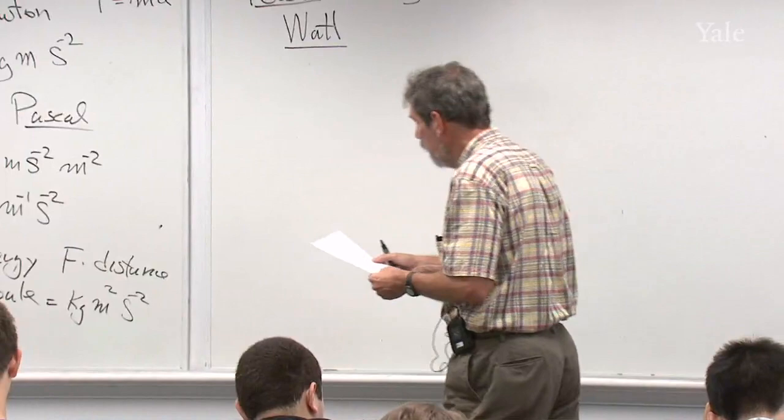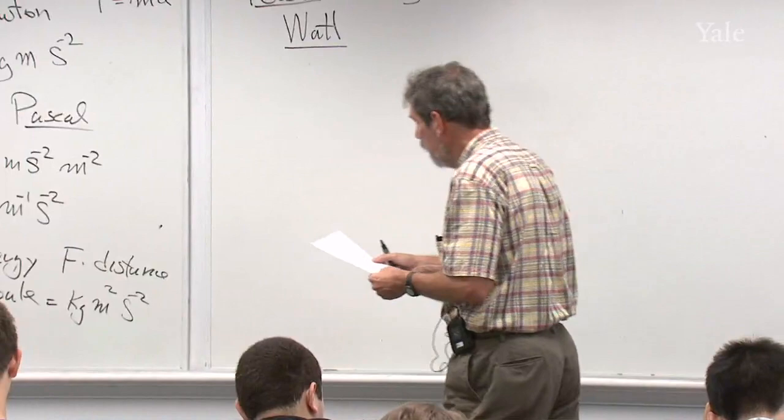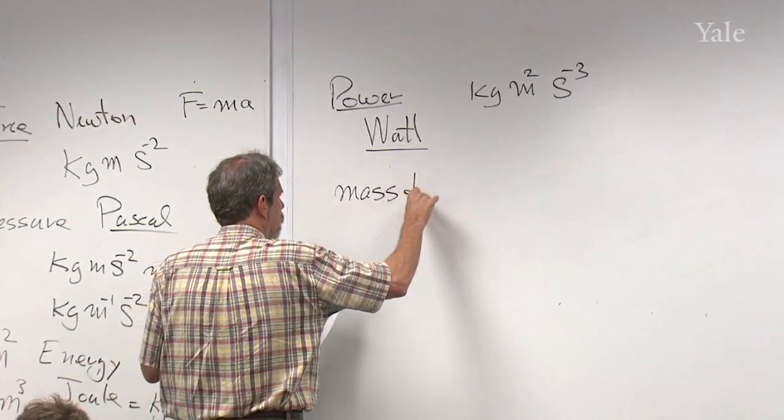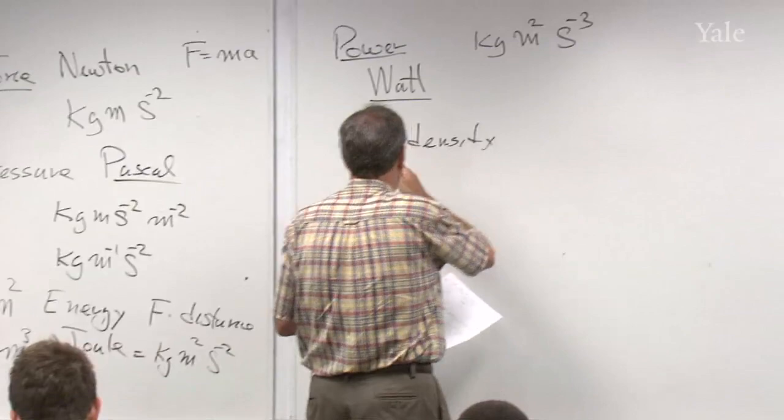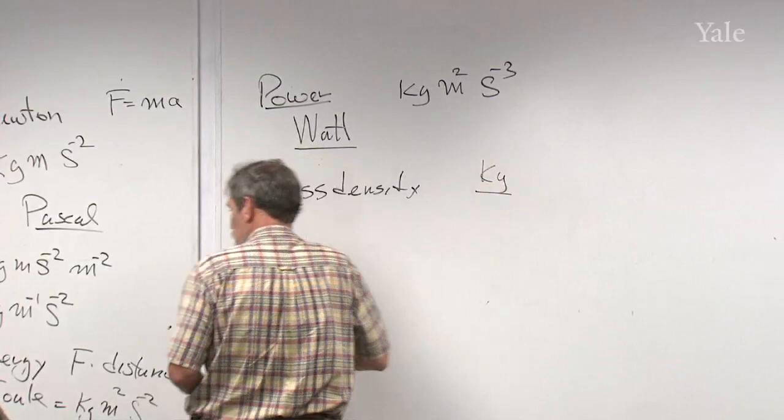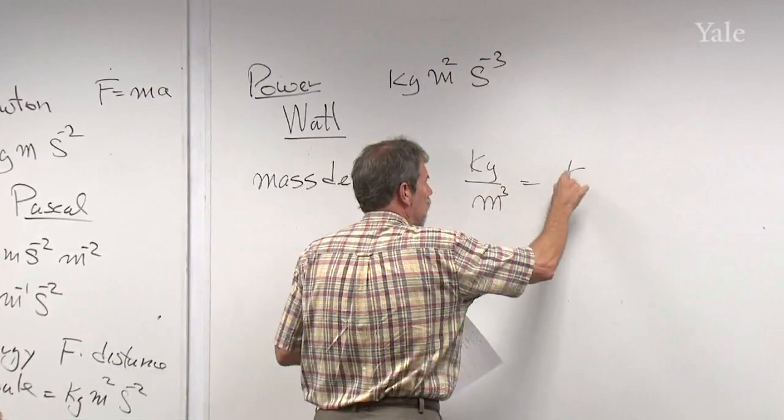One more unit we'll be using today is mass density — how much mass of a fluid or object there is per unit volume. It's a mass per unit volume, and there's no special name for it: it's kilograms per meter cubed, or kg·m⁻³.